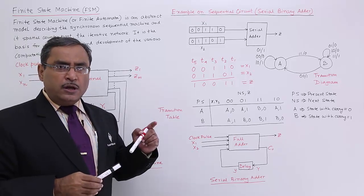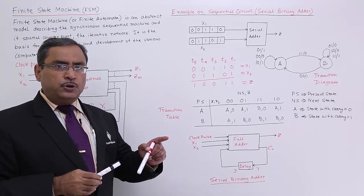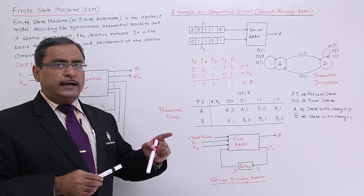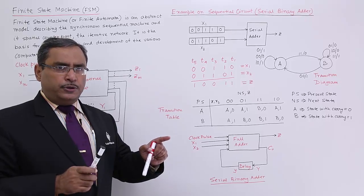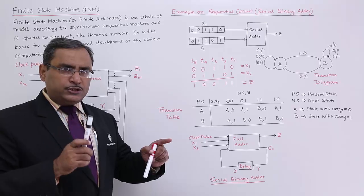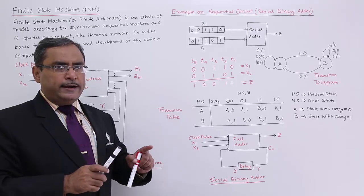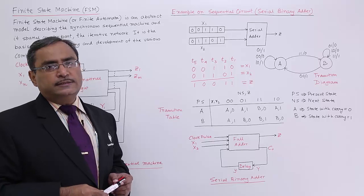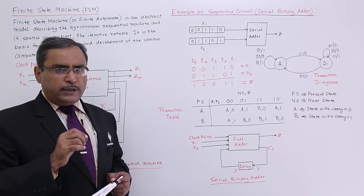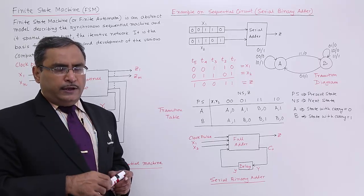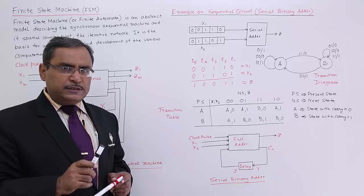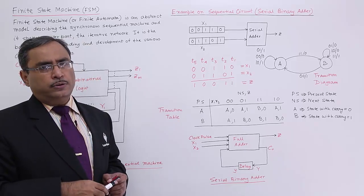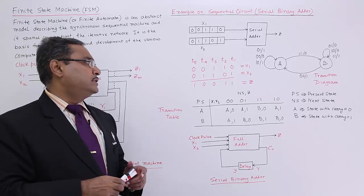In a serial adder, one bit from X1 and one bit from X2 go into the serial adder together, get added, and the output Z is obtained. When adding two bits, the previous carry must also be taken into account.